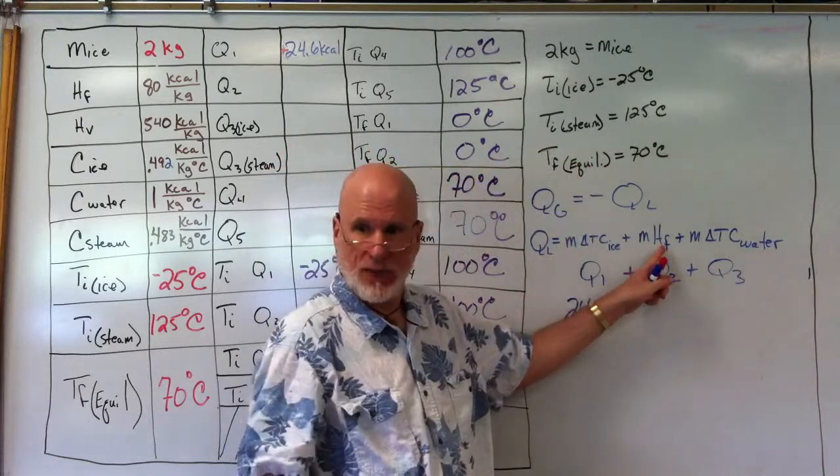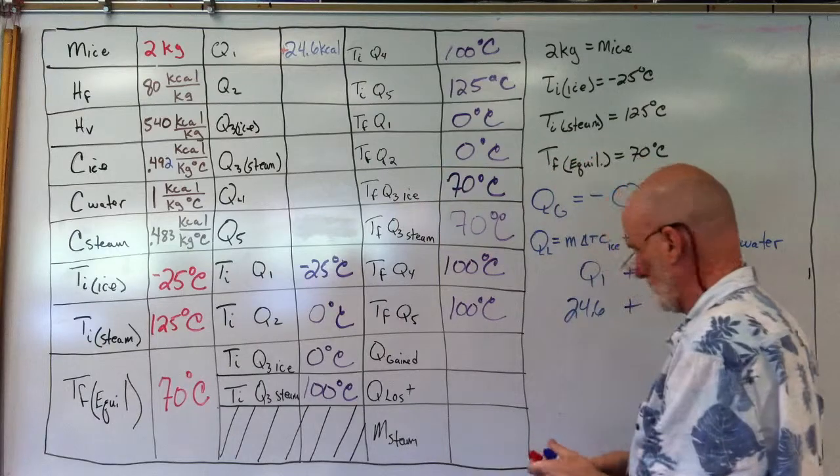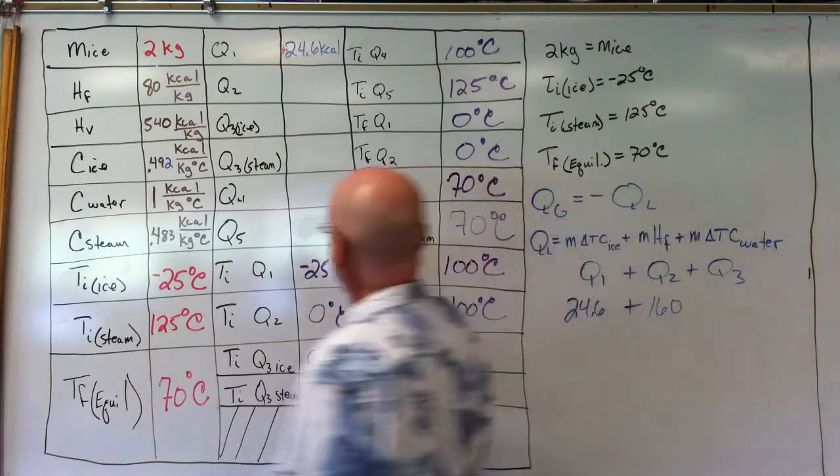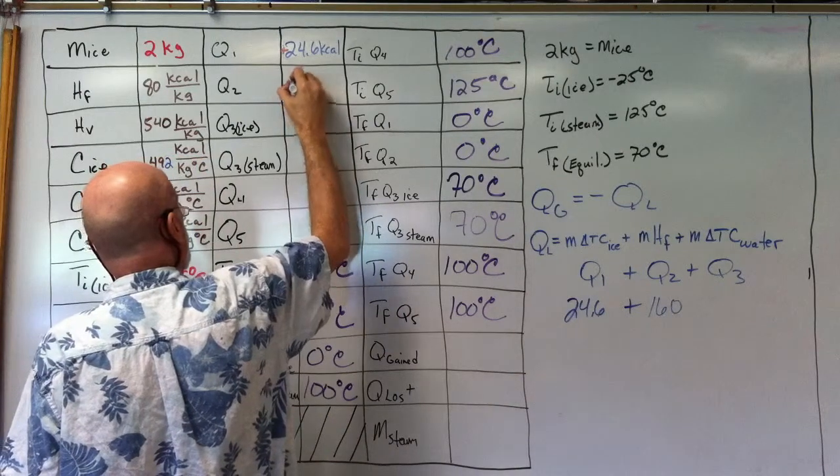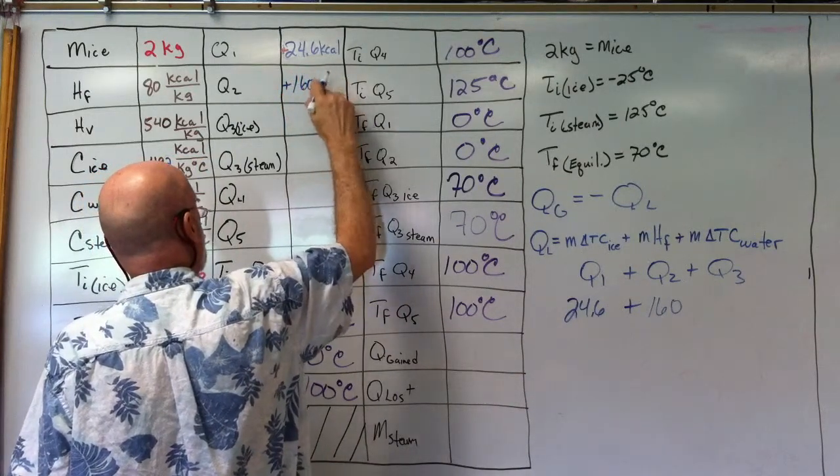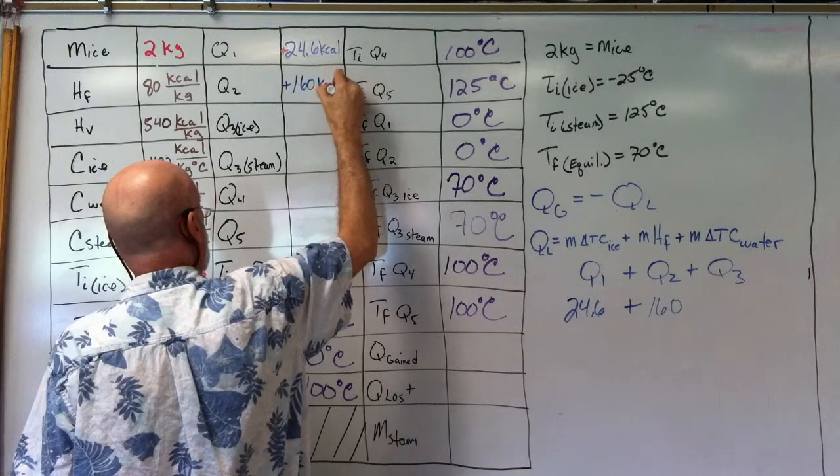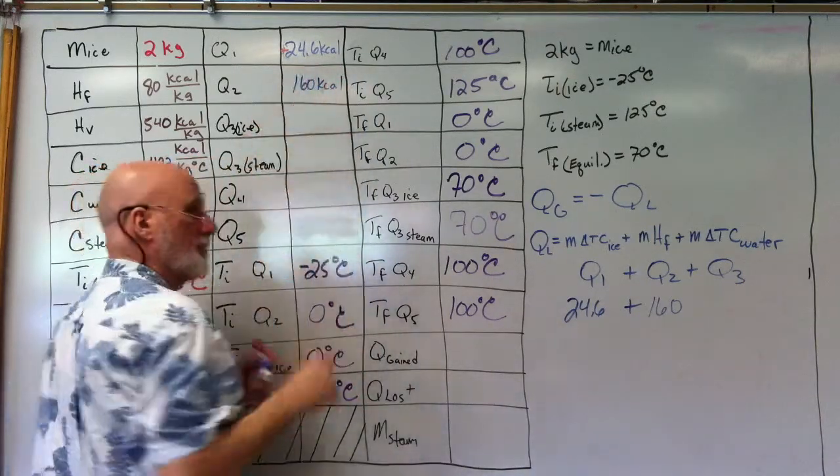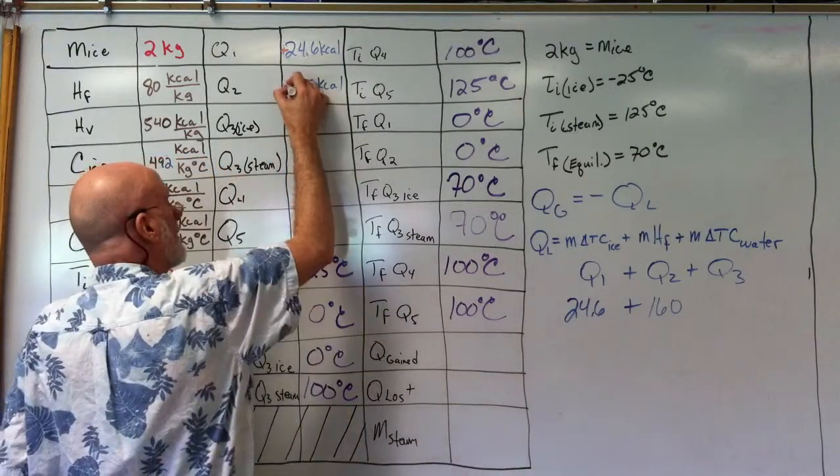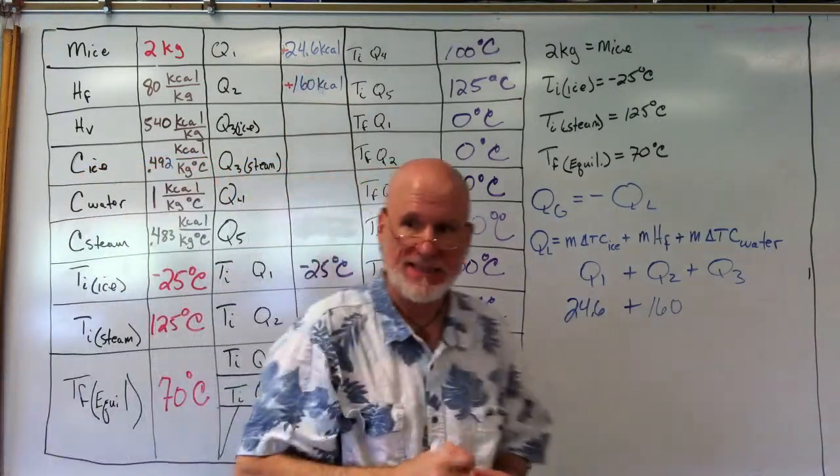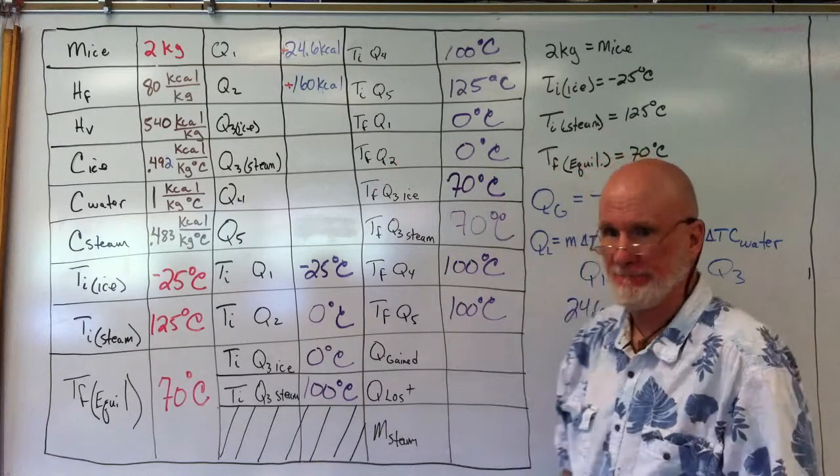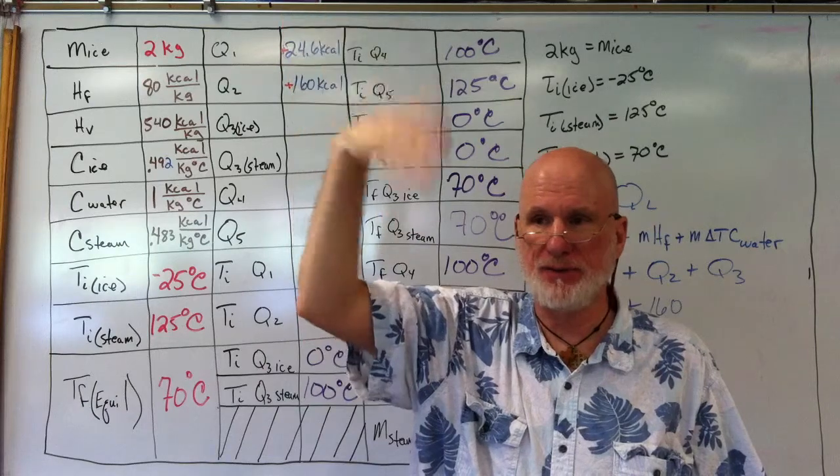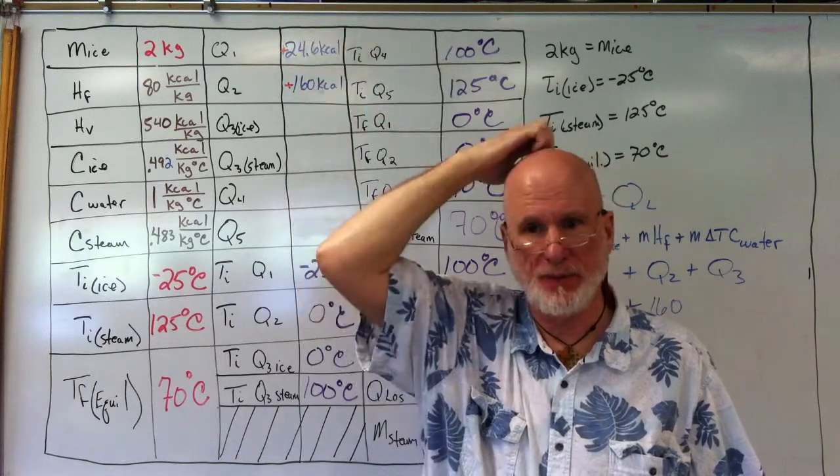Mass two times 80 is 160. I'm going to put all the signs in red. Now I'm going to go from zero to 70. Zero liquid, 70 liquid, right?